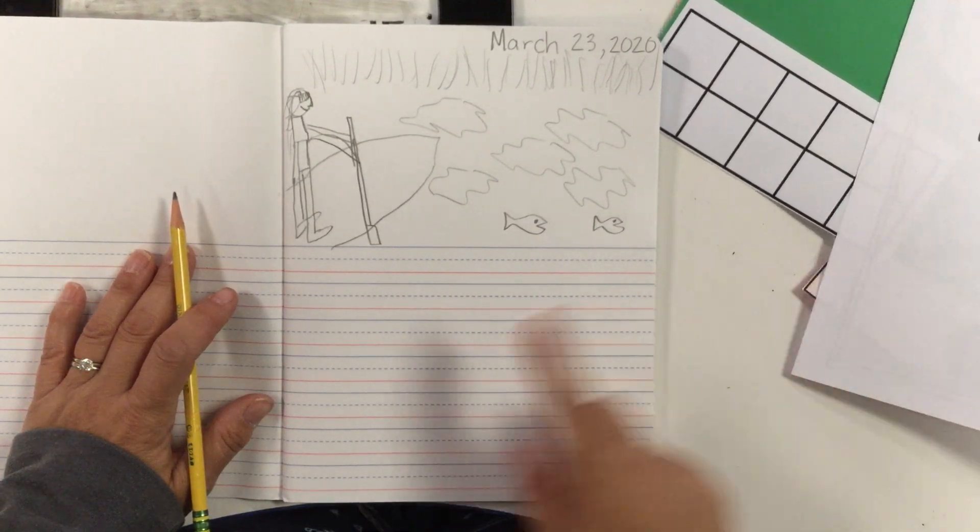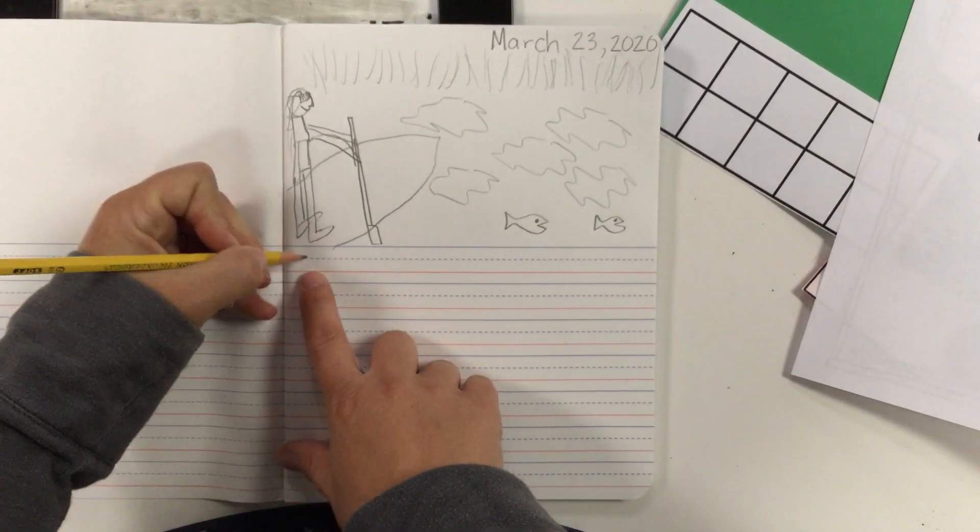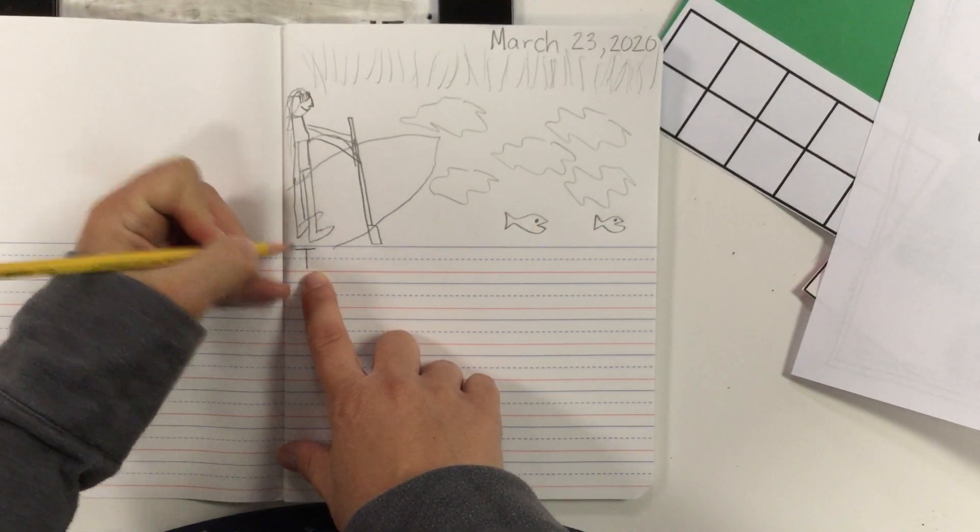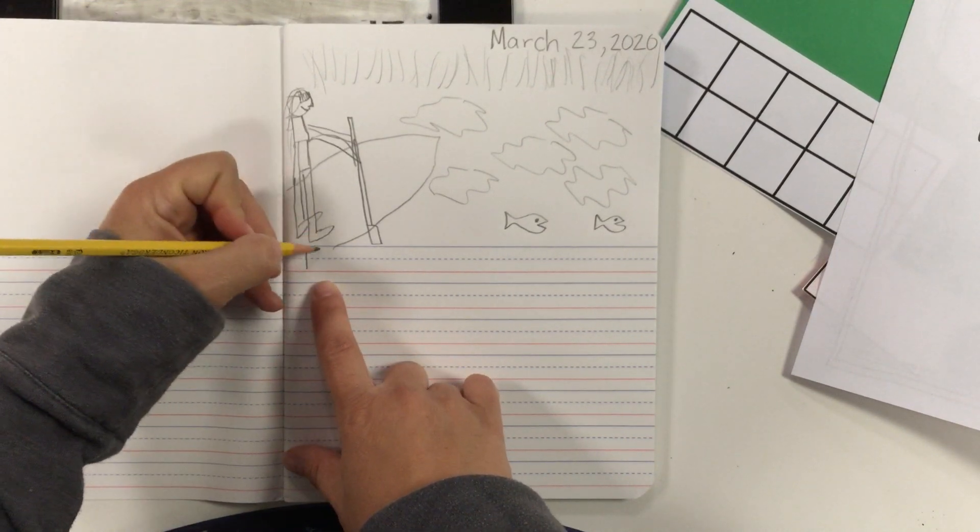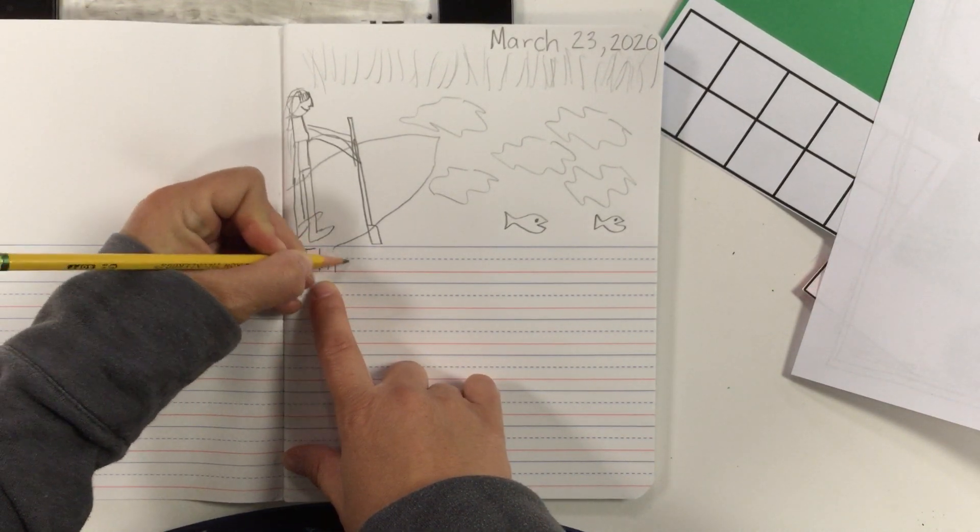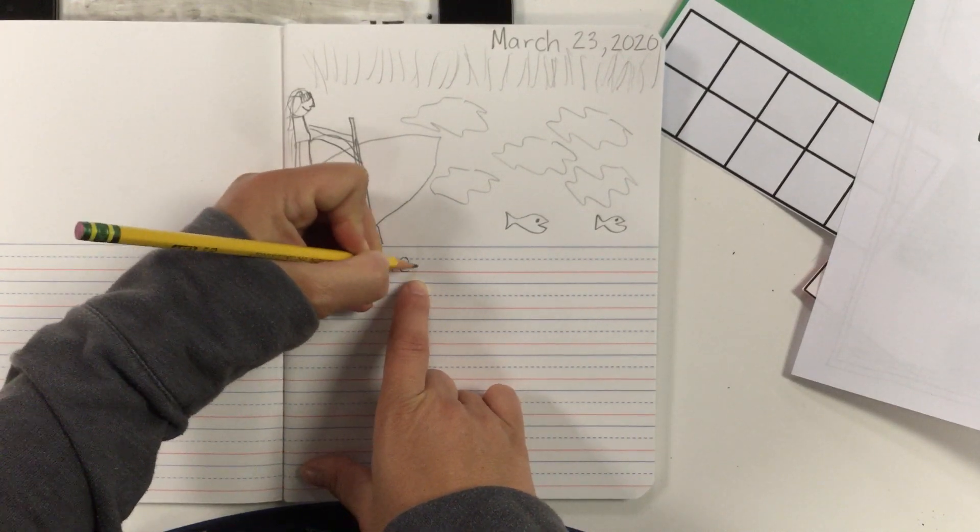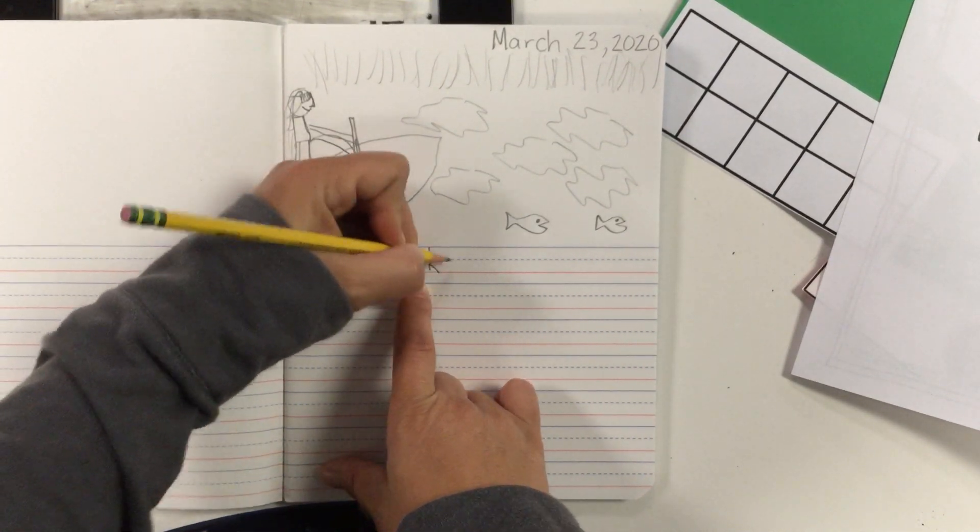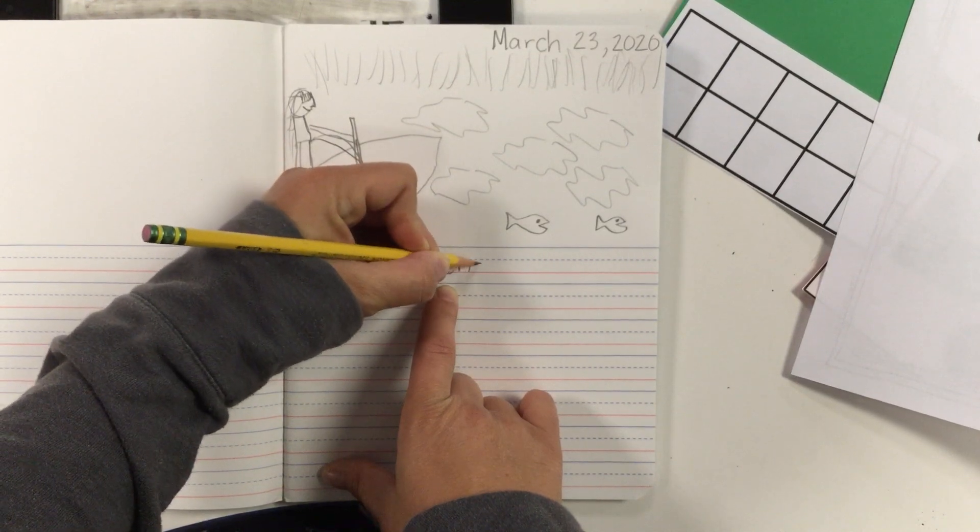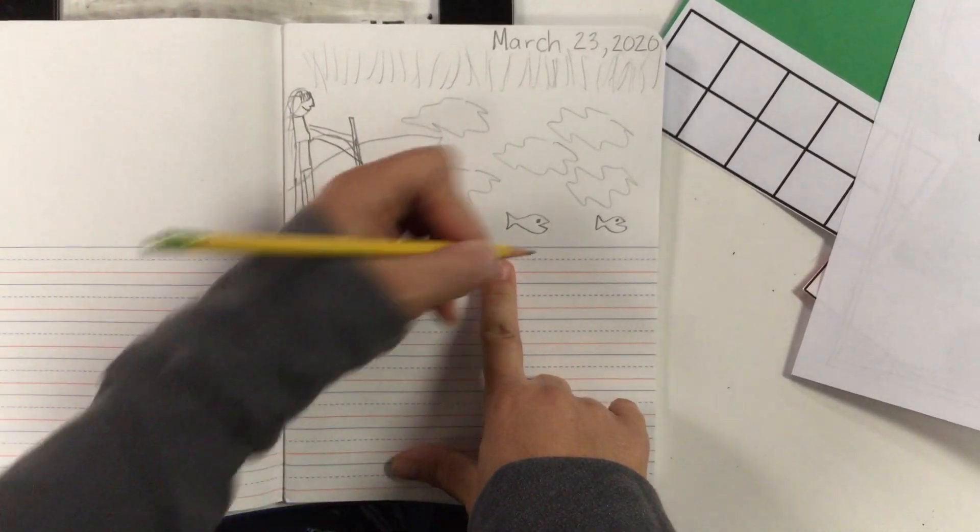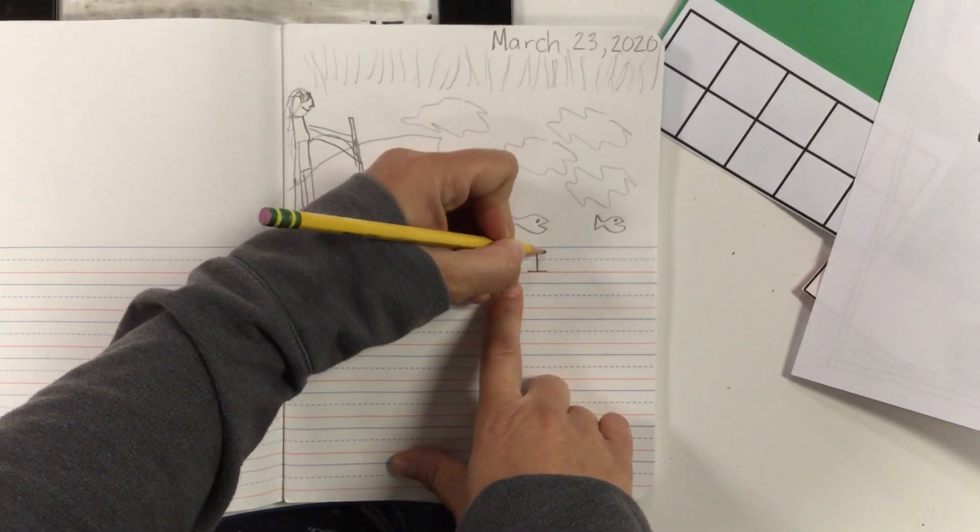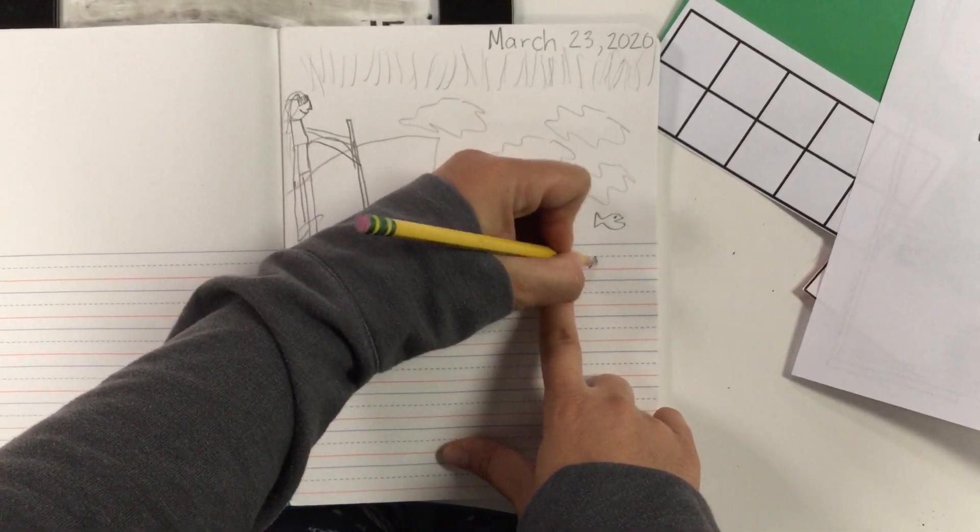All right, and so there's my picture. Remember you draw, write, and then color. So now I'm going to write and I'm going to keep in mind all of my rules. So I'm going to spell my sight words correctly with a capital letter. This, weekend.